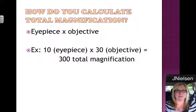How do we calculate the total magnification? We take the eyepiece and we multiply it by the objective that we're using. Remember, there are three objectives on the revolving nosepiece. The eyepiece always has a value of 10. With the 30 objective, 10 times 30 gives you 300 total magnification. If you're using the 40 objective, then 10 times 40 would be 400. It's the eyepiece times the objective, and you will have to know how to do this for the Regents exam.